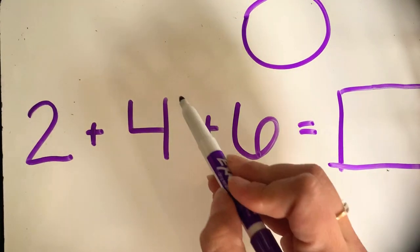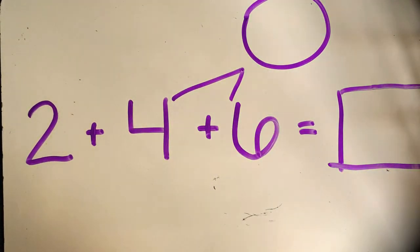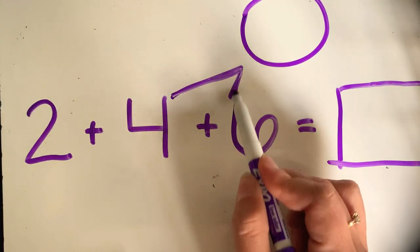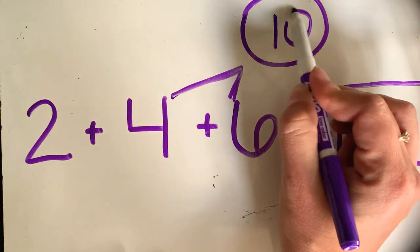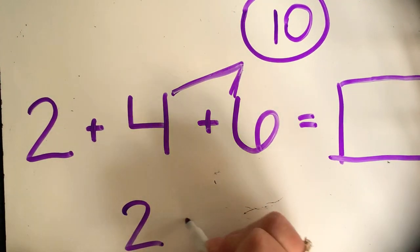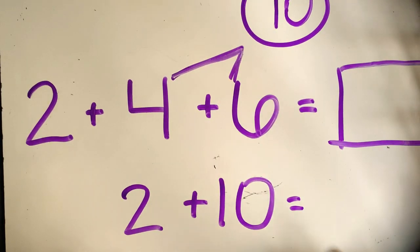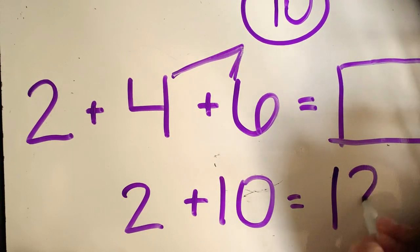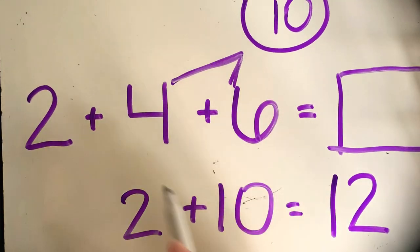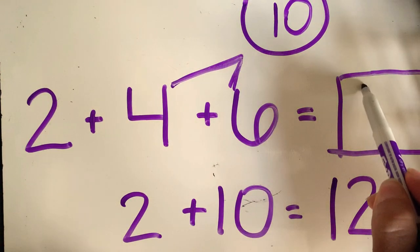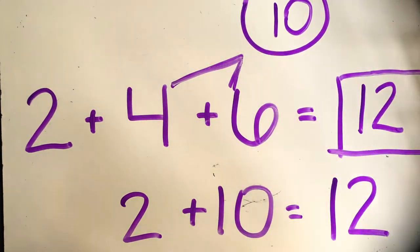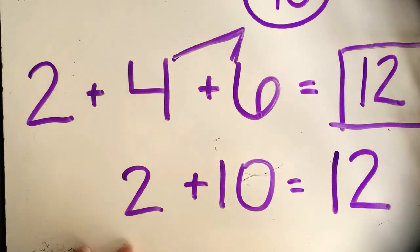So in our circle above, these two would - you would draw the line for these two, and we would put the ten here. And then what's two plus ten? Twelve. So two plus four plus six equals twelve.